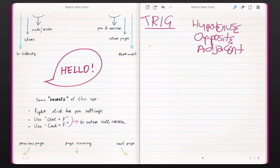So those are the three things that we're going to label. So let's start with an example. When we're talking about trigonometry, when we're talking about SOHCAHTOA, we're always talking about right angle triangles.